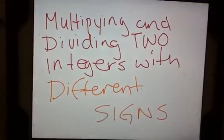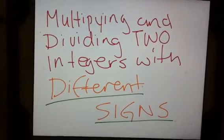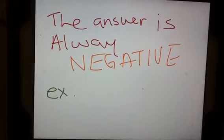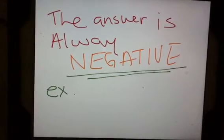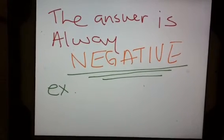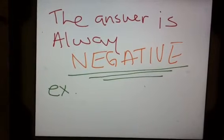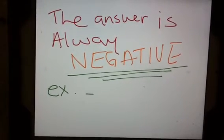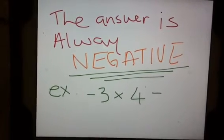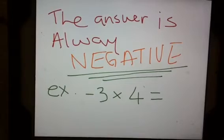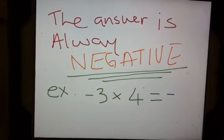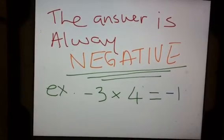Multiplying and dividing two integers with different signs is slightly different. When we have different signs, the answer is always going to be negative. When the signs are different, it's negative; when the signs are the same, it's positive. For example, negative 3 multiplied by 4 — because the signs are different, the answer is negative, and 3 times 4 is 12, so the answer is negative 12.